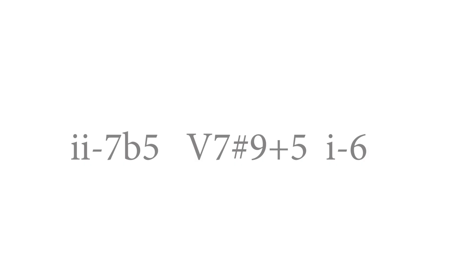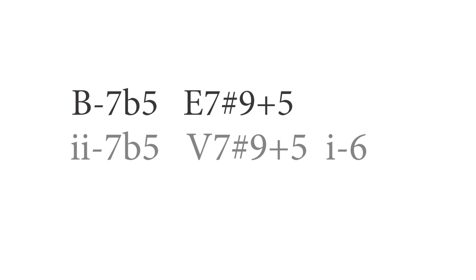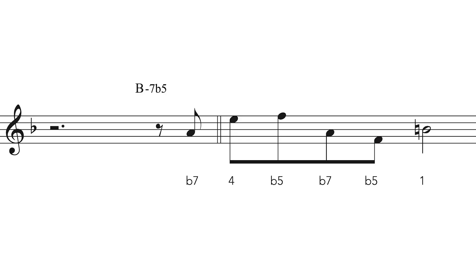To carry out our experiment of superimposing the Recorder Me melody over a minor 2-5-1, we will need to do some transposition. Let's choose B minor 7 flat 5, E7 sharp 9 augmented 5th, to A minor 6 to work on. As B minor 7 flat 5 is one of the chords the Recorder Me melody fragment works over, here is the melody over B minor 7 flat 5 again.